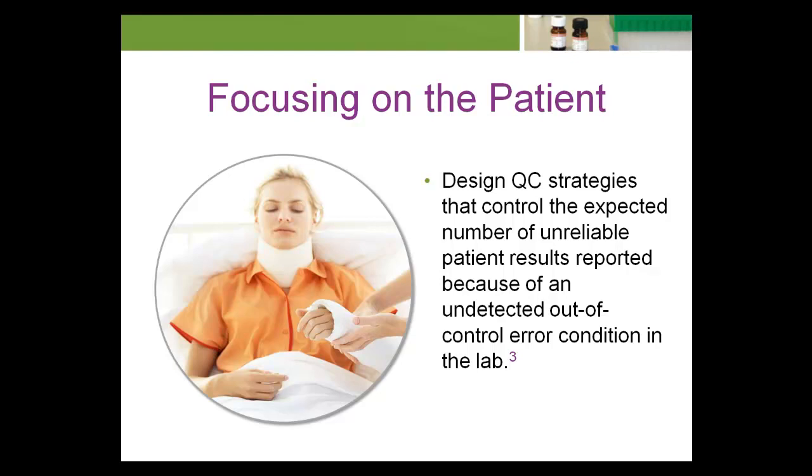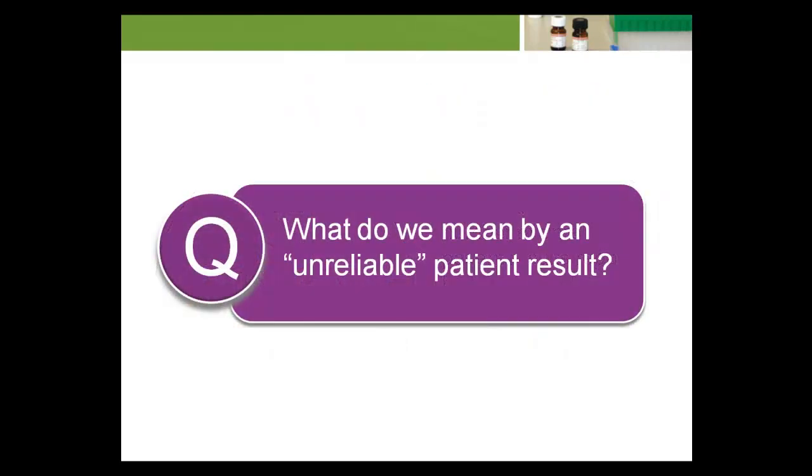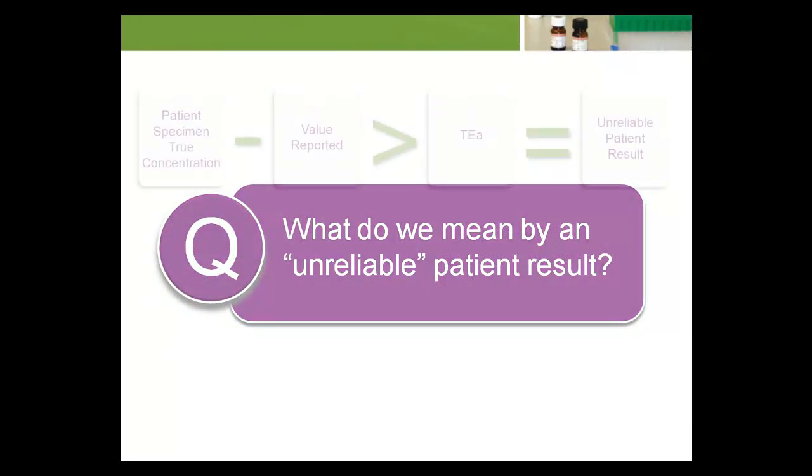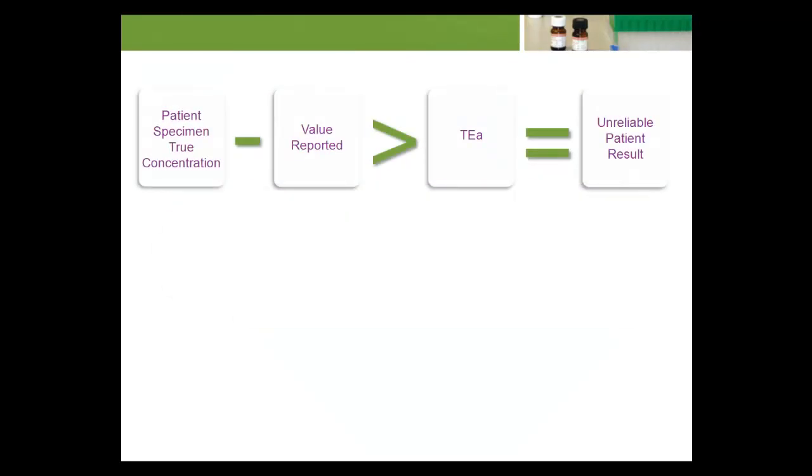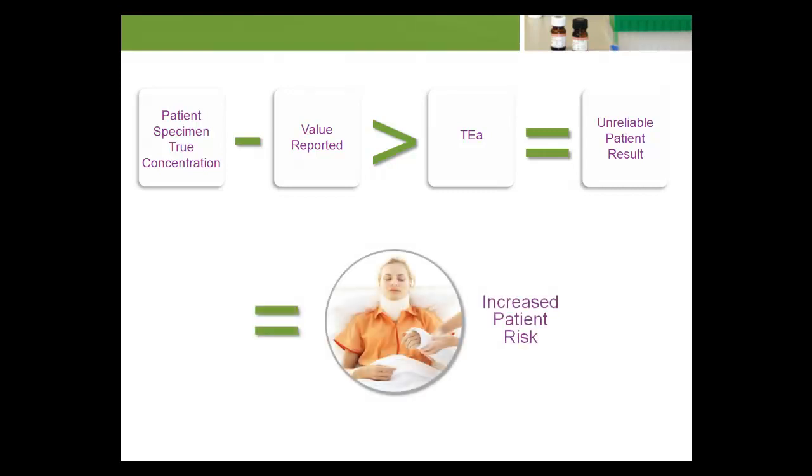What do we mean by an unreliable patient result? The quality of a patient result depends on the difference between the patient specimen's true concentration and the value reported by the laboratory. We define an unreliable patient result as one where the difference between the patient specimen's true concentration and the value reported exceeds a specified total allowable error, TEA. If the error in a patient's result exceeds TEA, we assume it places the patient at increased risk of experiencing a medically inappropriate action.